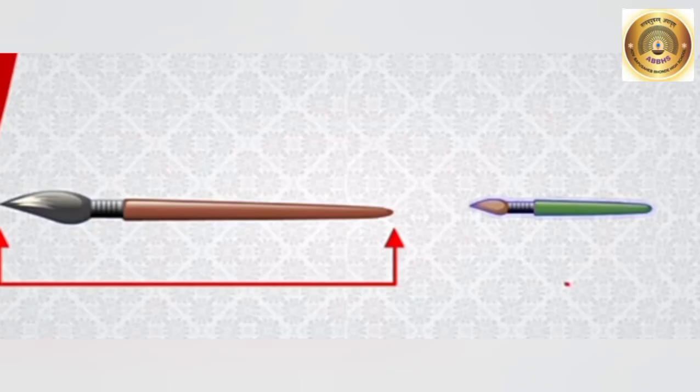Now, here you can see two brushes. The brown brush is long and the green one is short. So, children, have you all understood the difference between long and short? Yes.